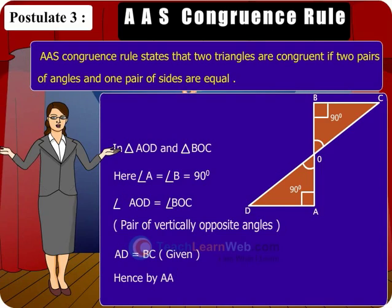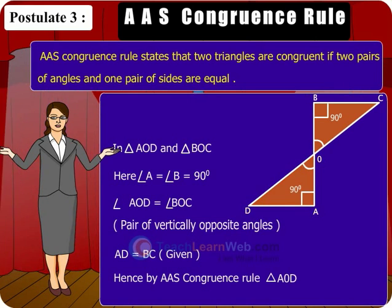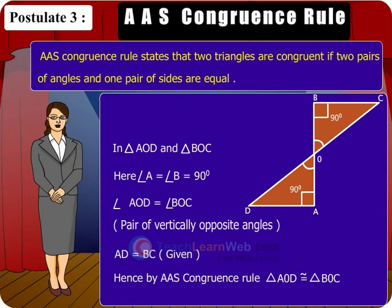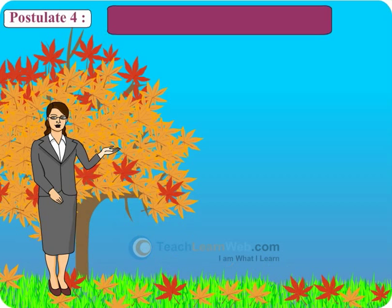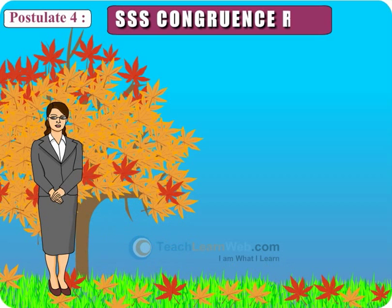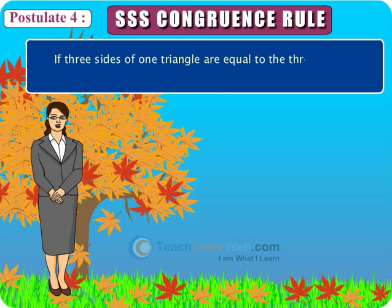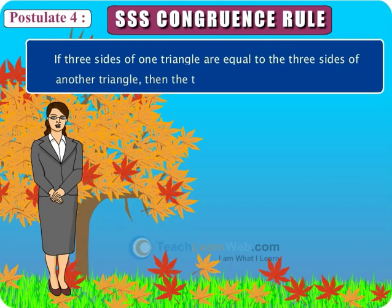Hence, by AAS congruence rule, triangle AOD is congruent to triangle BOC. Postulate 4: SSS congruence rule. If three sides of one triangle are equal to the three sides of another triangle, then the two triangles are congruent.